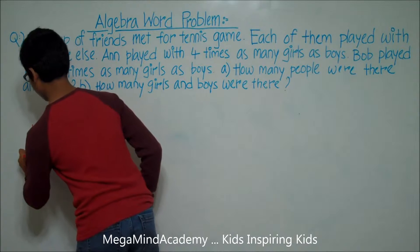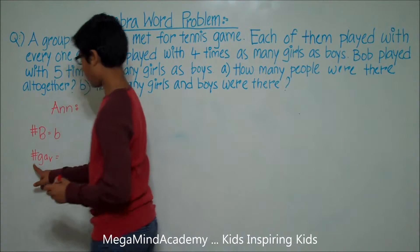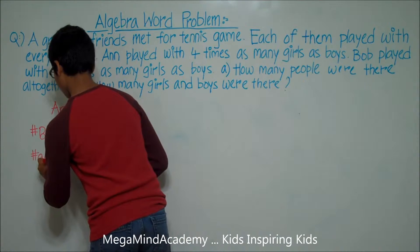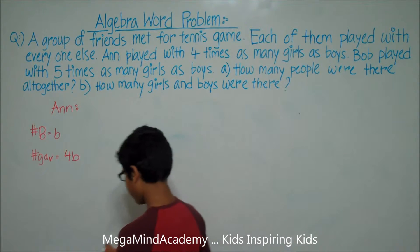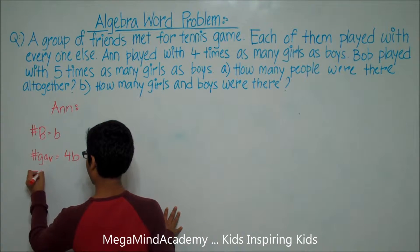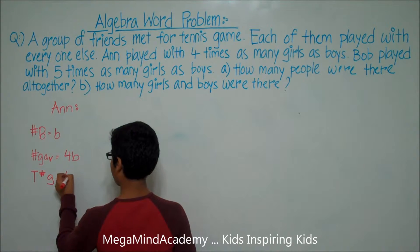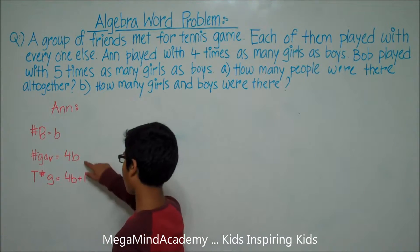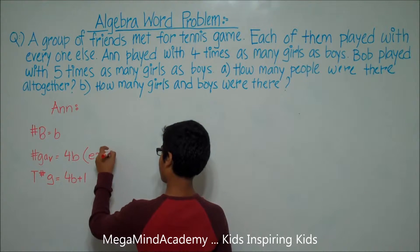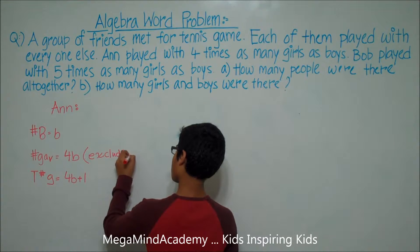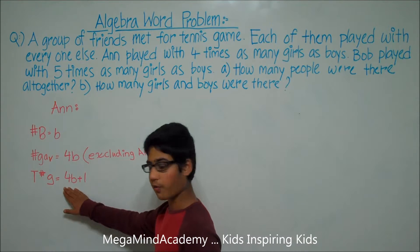So the number of girls Ann played with is equal to 4B, or four times B. But the total number of girls is equal to 4B plus one, because this 4B is the number of girls excluding Ann. So the total number of girls is equal to 4B plus one.